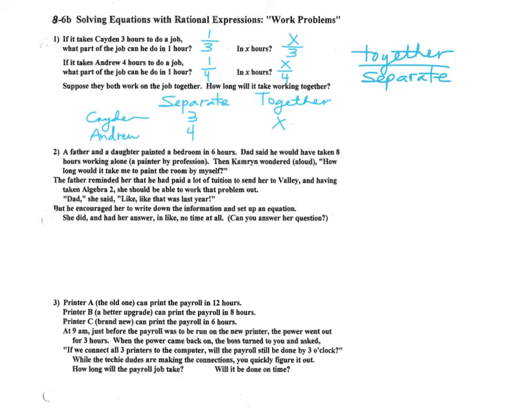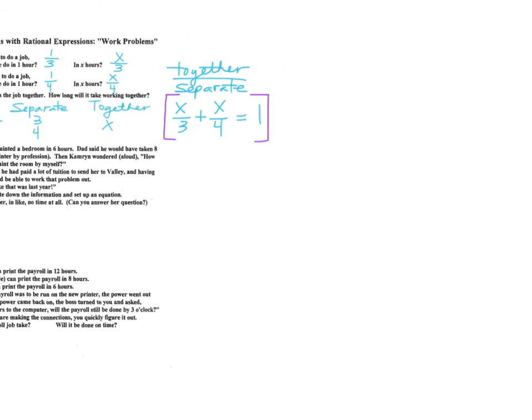So it would be together over separate for Caden is x over three. Plus together over separate for Andrew is x over four. And that is one job, right? They complete the job. It's 100% of the job done. If that is then our setup, at this point, you should know how to solve it. What do we do here? Multiply everything by what? By 12. The least common denominator. So we're going to take this whole thing and we're going to multiply by 12.